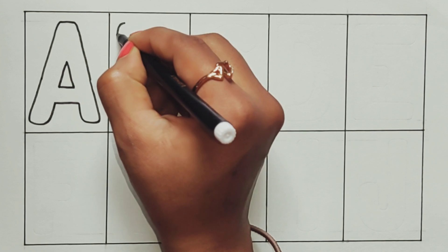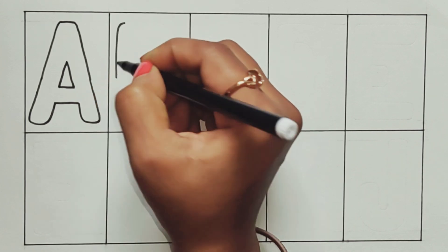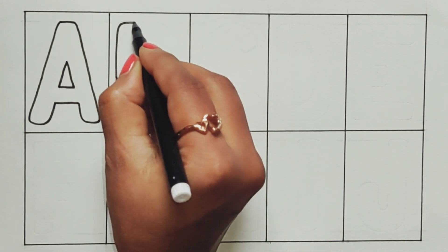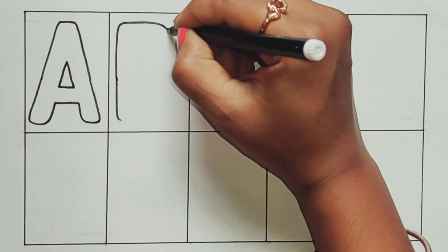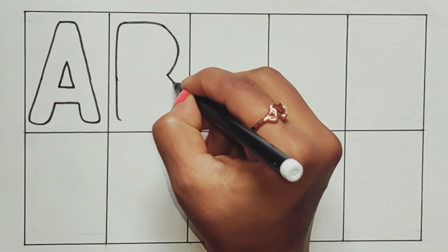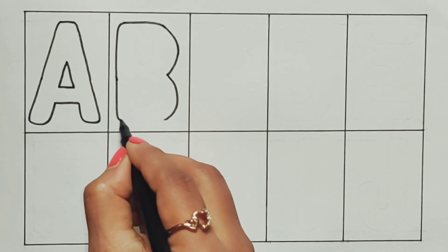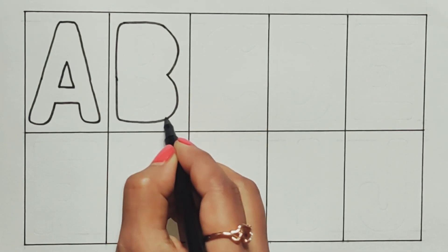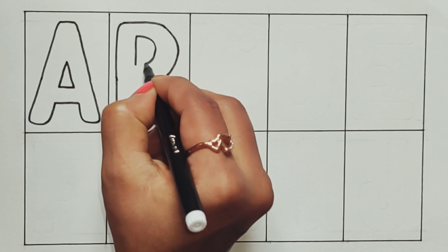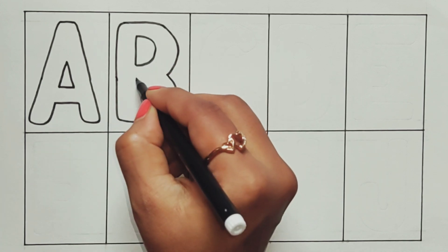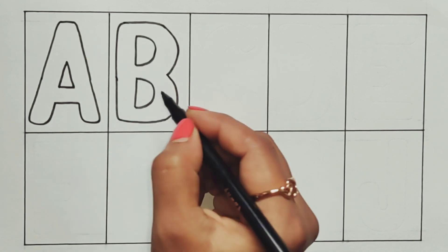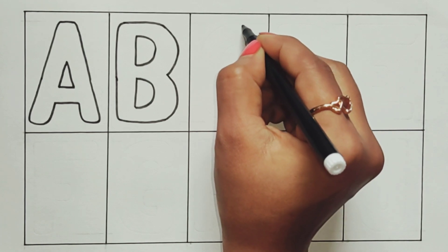A, A, B, C, D, E, F, G, H, I, J, K, L, M, N, O, P, Q, R, S, T, U, V, W, X, Y, and Z. Now I know my ABCs, next time won't you sing with me?